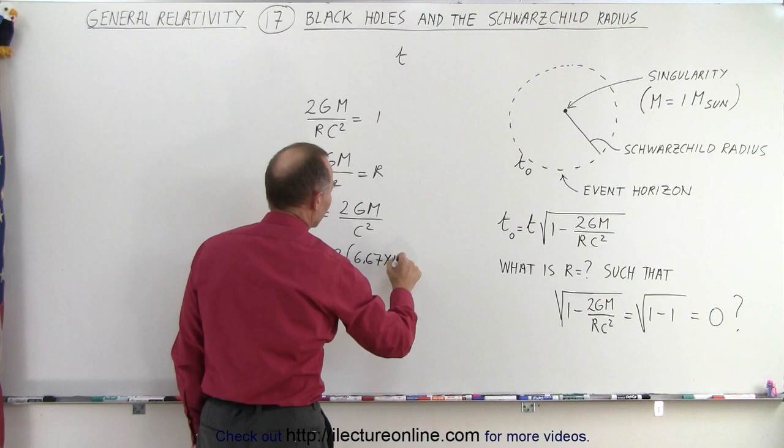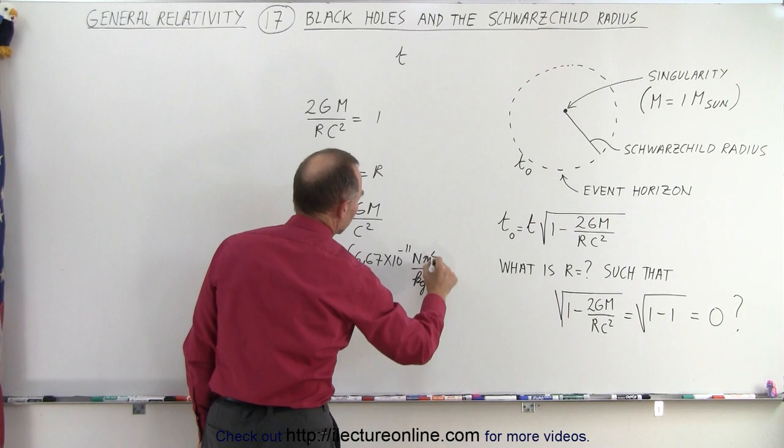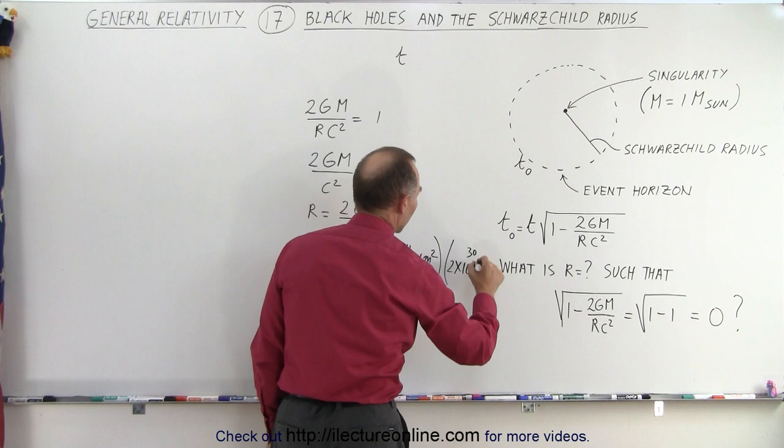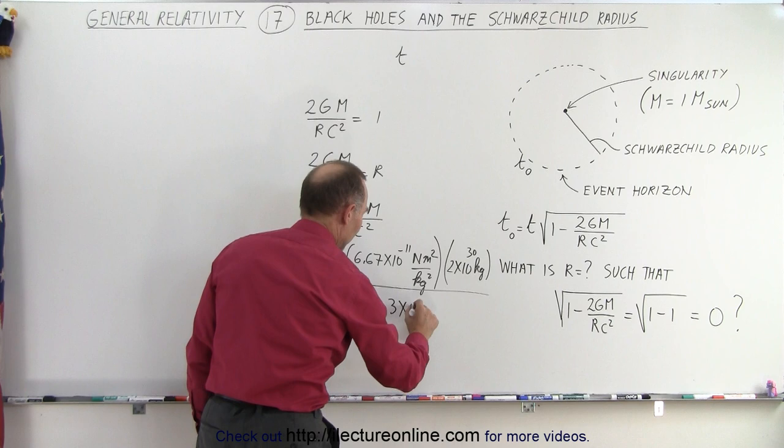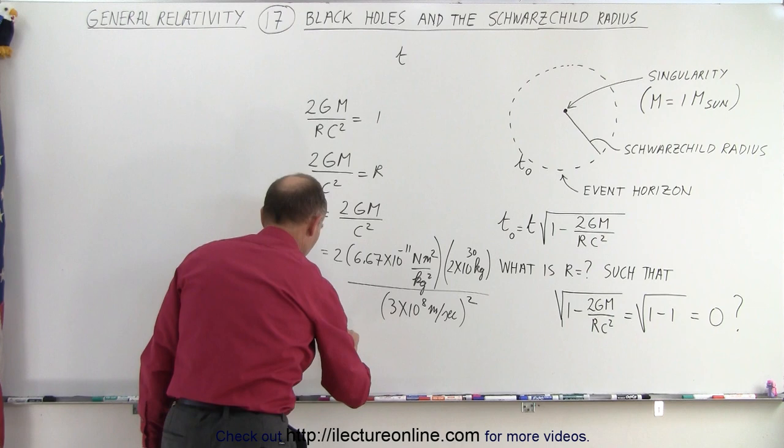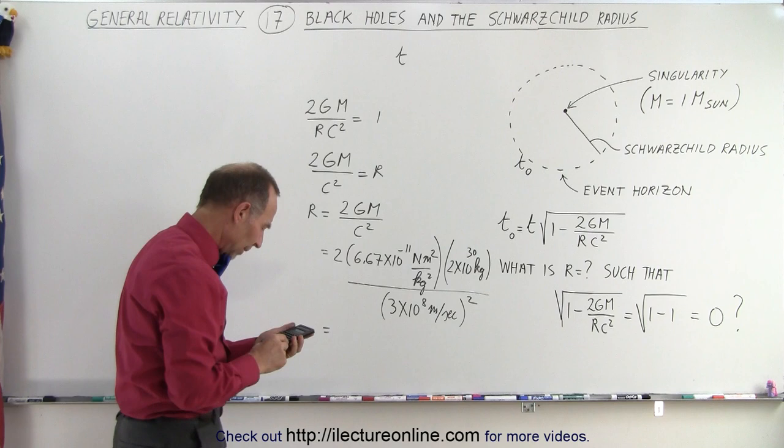So that would be equal to 2 times g, which is 6.67 times 10 to the minus 11 newtons, meters squared per kilogram squared, times the mass of the sun, which is 2 times 10 to the 30th kilograms, all divided by the speed of light, 3 times 10 to the 8 meters per second. And we have to square that. And so that is equal to, and of course the radius would be in meters.